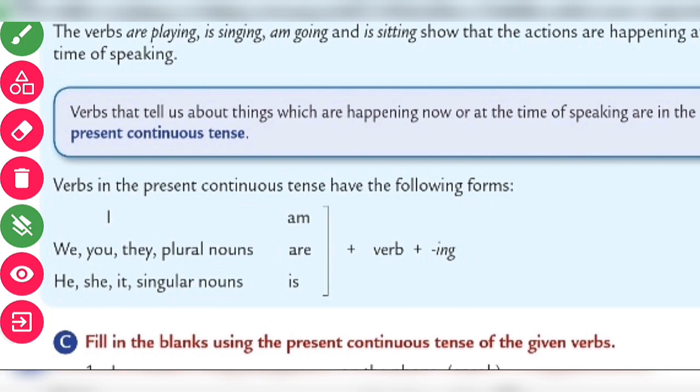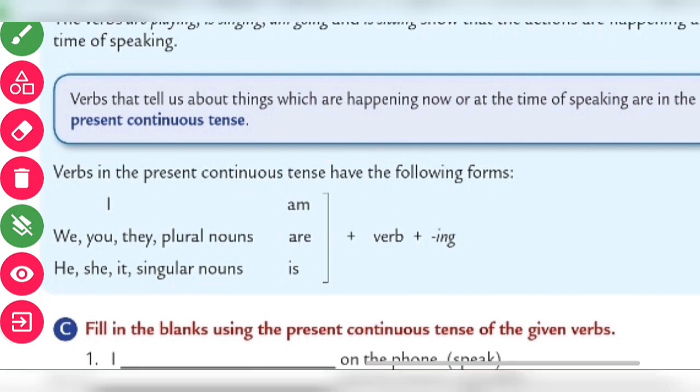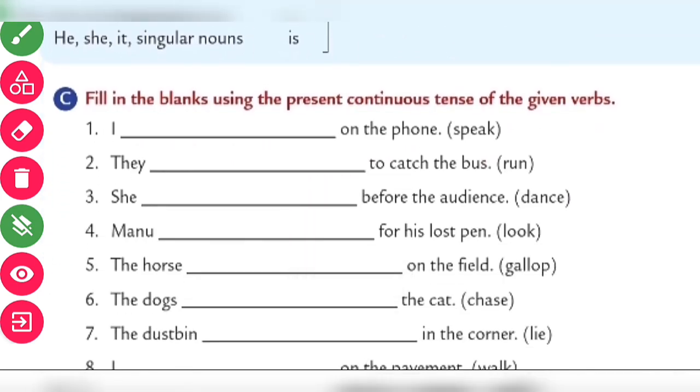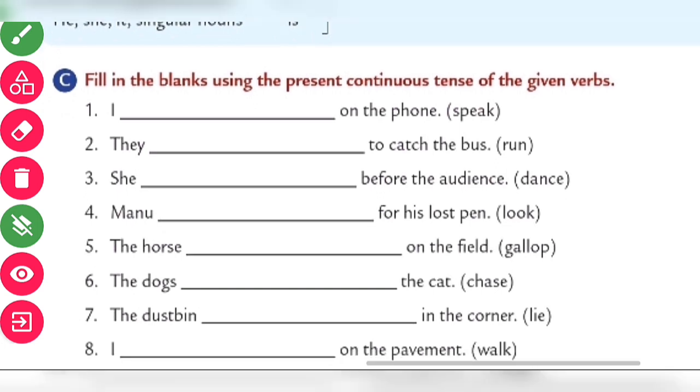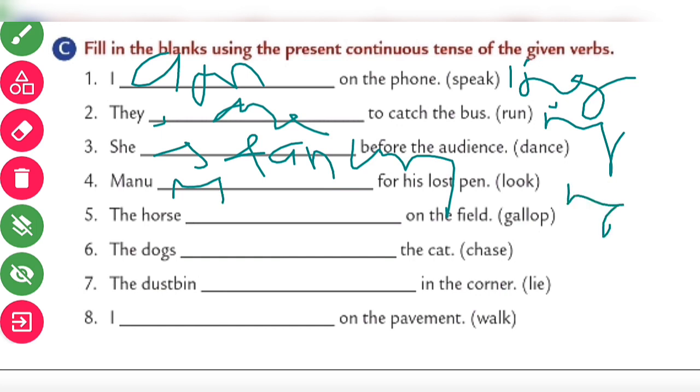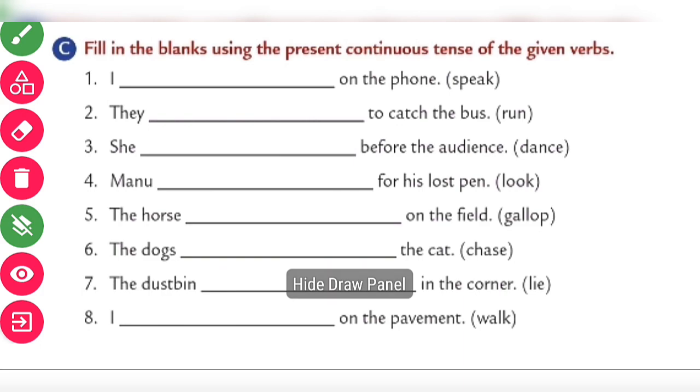Verbs that tell us about things which are happening now or at the time of speaking are in present continuous tense. What is the structure? Simply we use is, am, are with ing verb. Play becomes playing, cry becomes crying, sing becomes singing. Exercise C, fill in the blanks using the present continuous. I am speaking on the phone, they are running, she is dancing, Manu is looking, the horse is galloping, dogs are chasing, the dustbin is lying, I am walking. Exercise is completed.